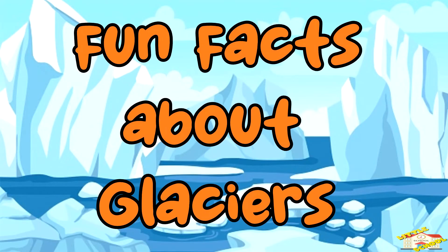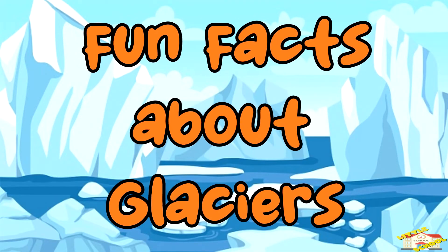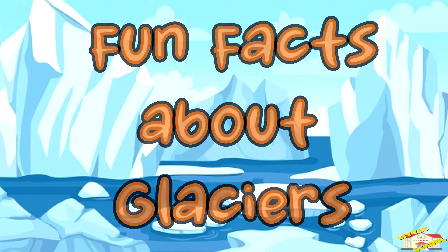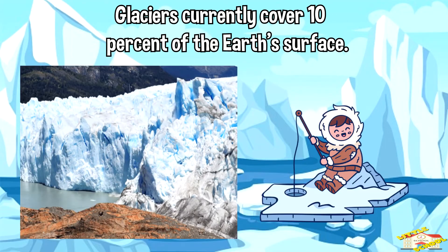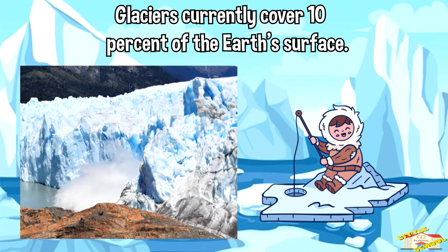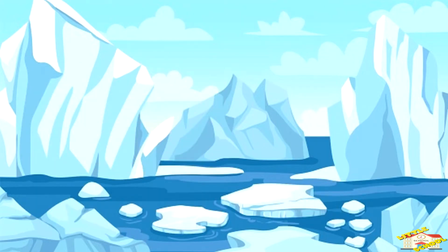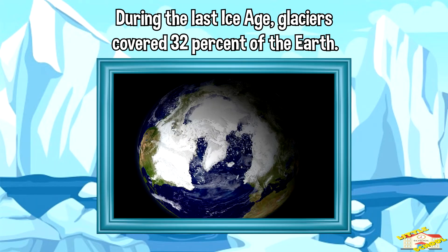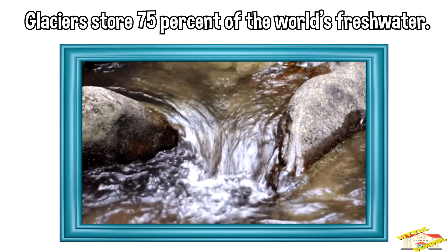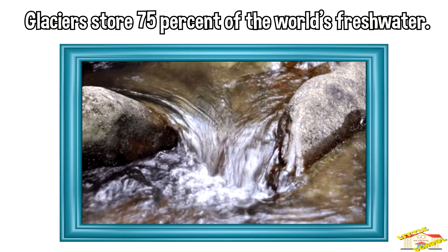Here are some fun facts about glaciers. Glaciers currently cover 10% of the Earth's surface. During the last ice age, glaciers covered 32% of the Earth. Glaciers store 75% of the world's freshwater.